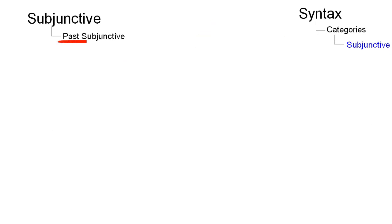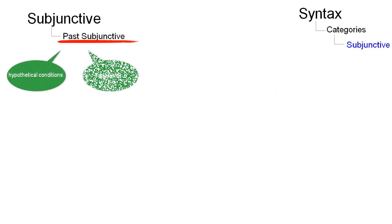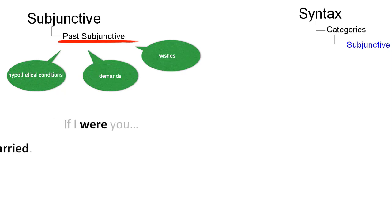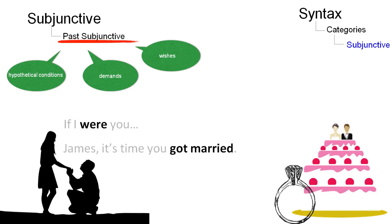The past subjunctive uses the simple past to show hypothetical conditions, demands, and wishes. Typical cases are seen in expressions like 'if I were you' and 'James, it's time you got married.'